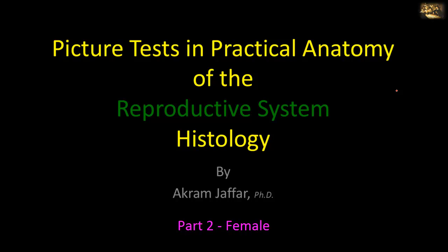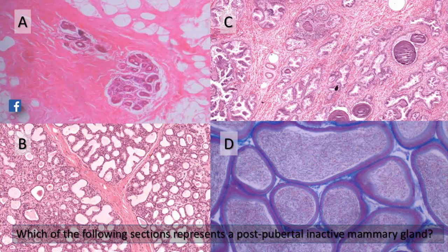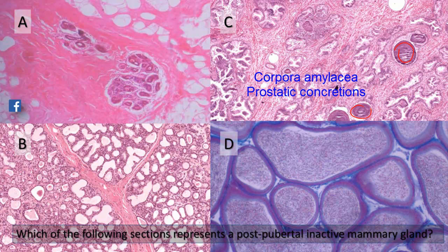Now I will deal with the histology of the reproductive system. Which of the following sections represents a post-pubertal inactive mammary gland? If you look at section C, for example, you will see a very characteristic feature: these are the prostatic concretions, corpora amylacea. So this is a prostate gland, not a breast.